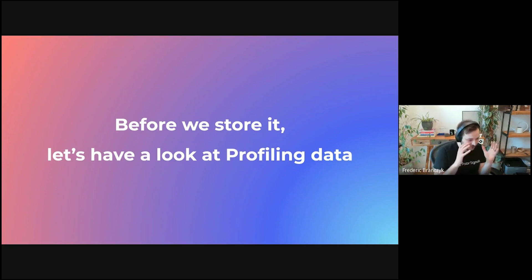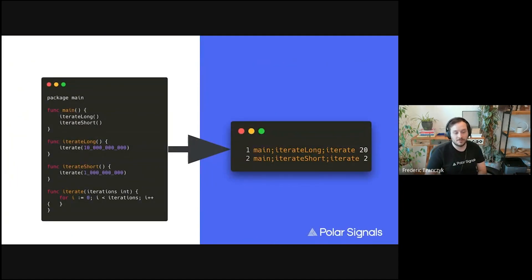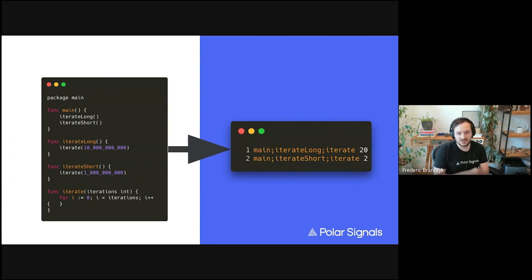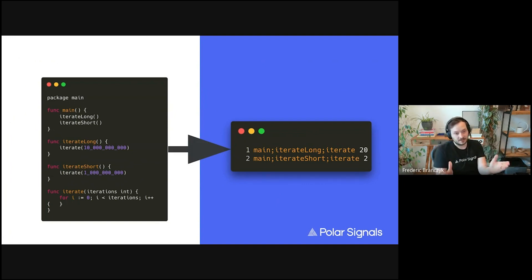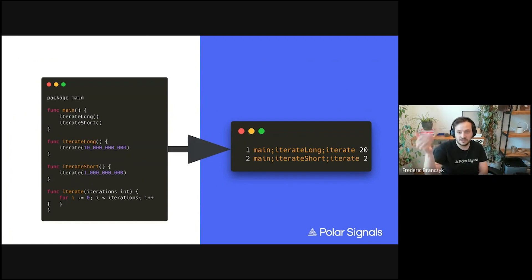Before we go into the nitty gritty of how to store this data, let's look at how profiling data actually looks. Take this simple Go program: a main function that calls two functions — one that does a billion iterations and another that does 10 billion iterations — just to produce CPU time. In its simplest form, profiling data is a stack trace and a number. Because we iterated 10 billion times in the long iteration and 1 billion times in the short one, we get a ratio roughly reflecting that. That's the crux of what profiling data looks like.